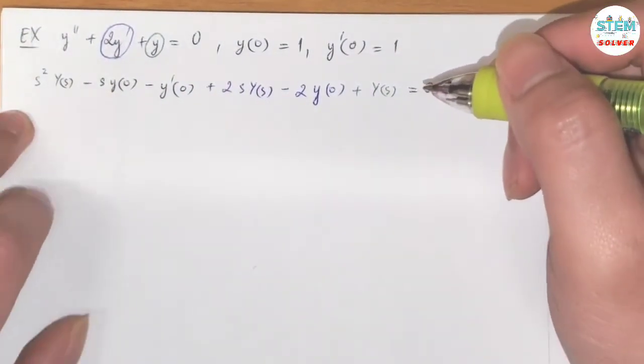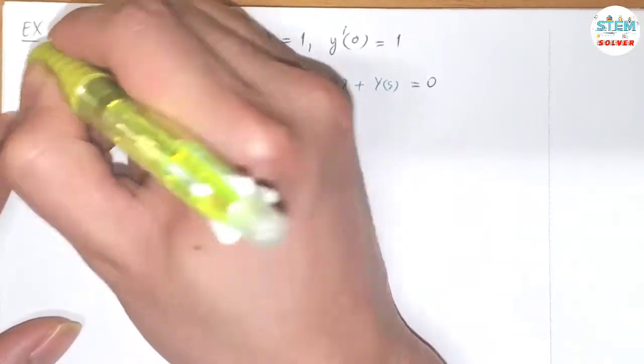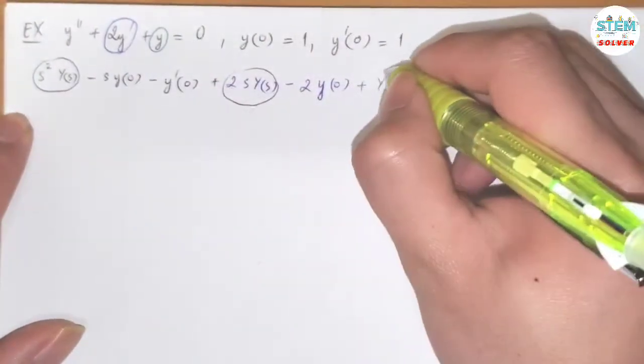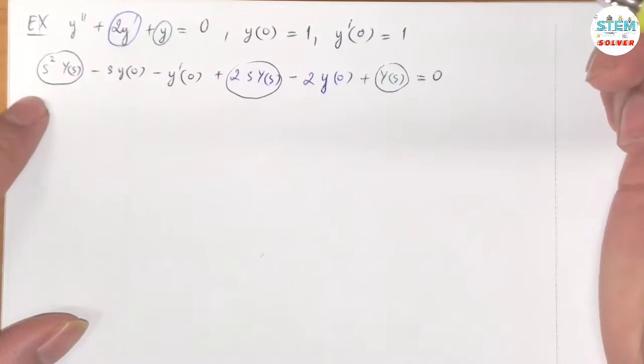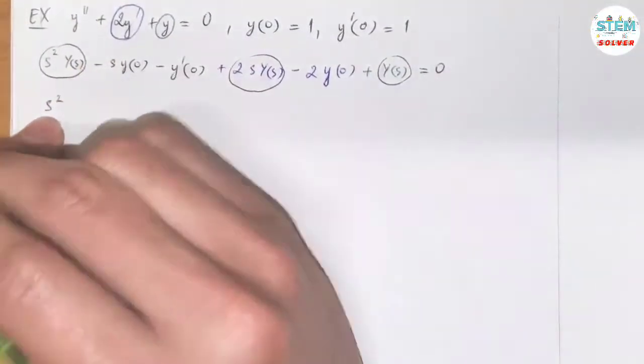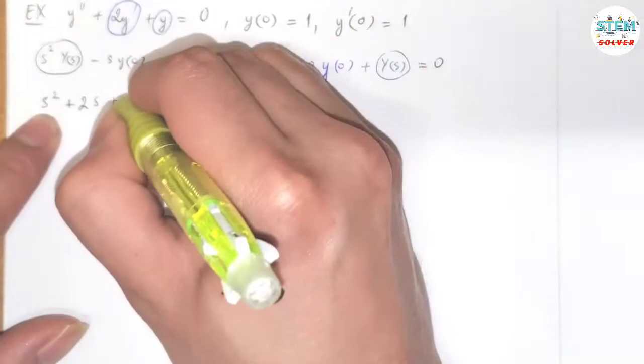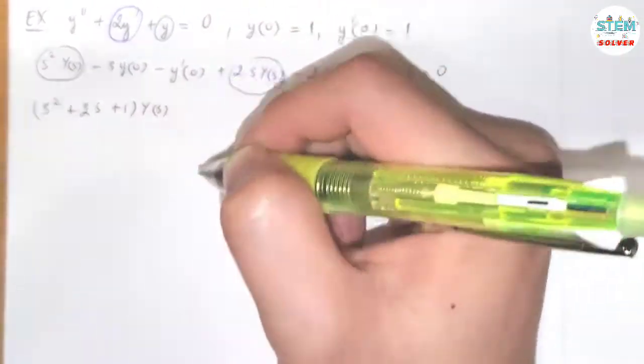Now we are going to take a look at the capital Y of s's. Then factor out capital Y of s. Then we're left with s squared plus 2s plus 1 times capital Y of s.